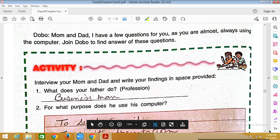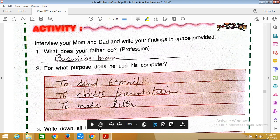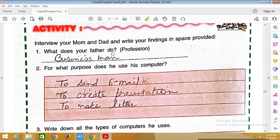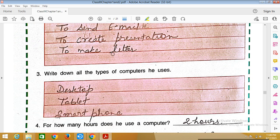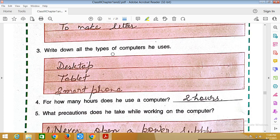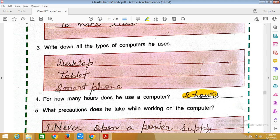Next activity: Interview your mom or dad. Write down all the types of computer. Father is working on the computer, so he can use for official purposes. Write down all types of computer he uses: desktop, tablet, smartphone. For how many hours does he use a computer? Two hours, three hours, four hours - you have to write here.